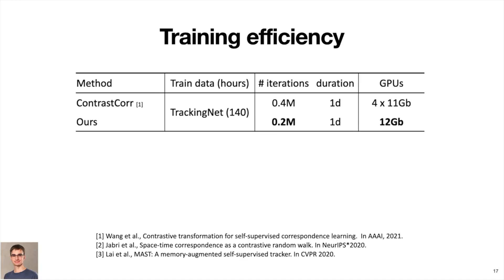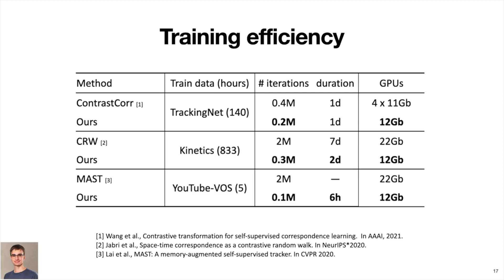Regardless of the training data we use, our approach requires fewer training iterations to converge, sometimes needing just a fraction of the training time of previous works. For example, our approach trains more than three times faster than the contrastive random walk approach.